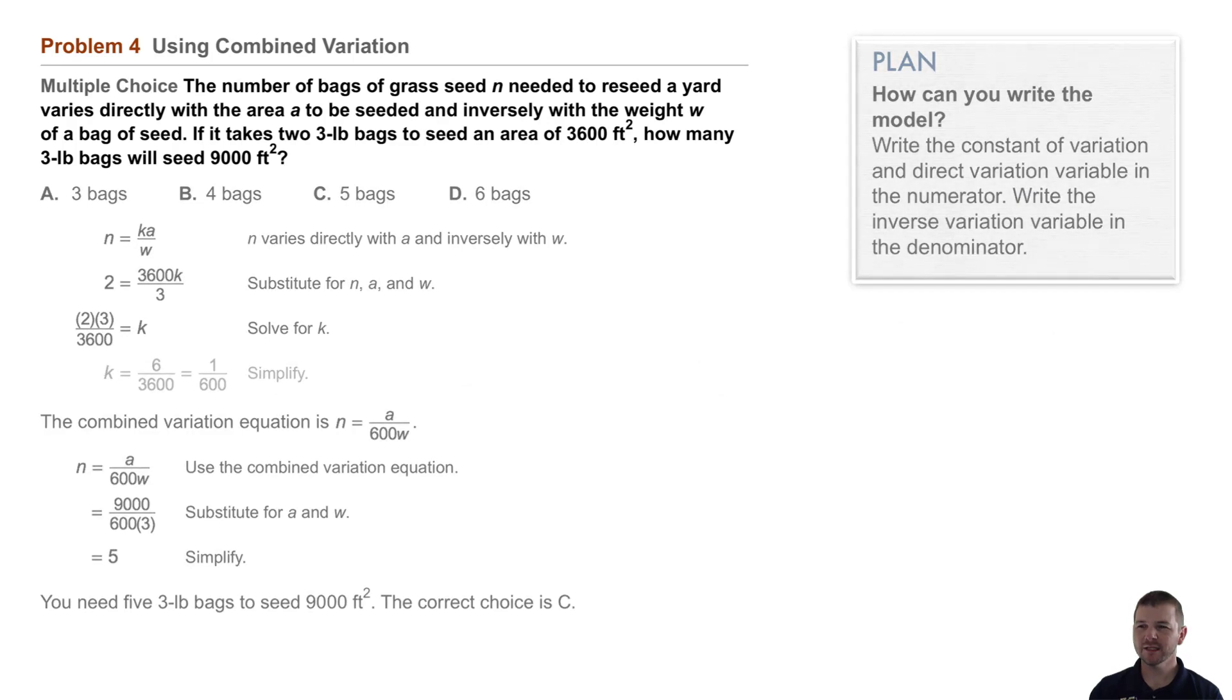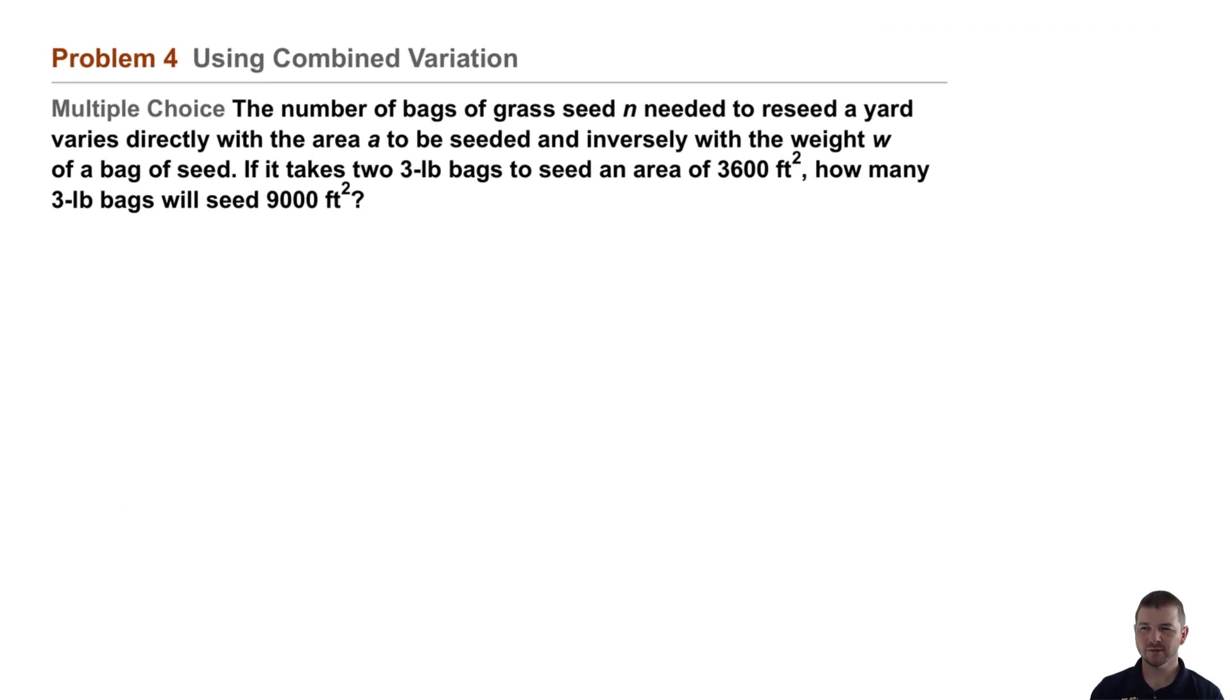Problem 4, using combined variation. This one's multiple choice. The number of bags of grass seed n needed to reseed a yard varies directly with the area a to be seeded and inversely with the weight w of a bag of seed. If it takes two 3-pound bags to seed an area of 3,600 square feet, how many 3-pound bags will seed 9,000 square feet?